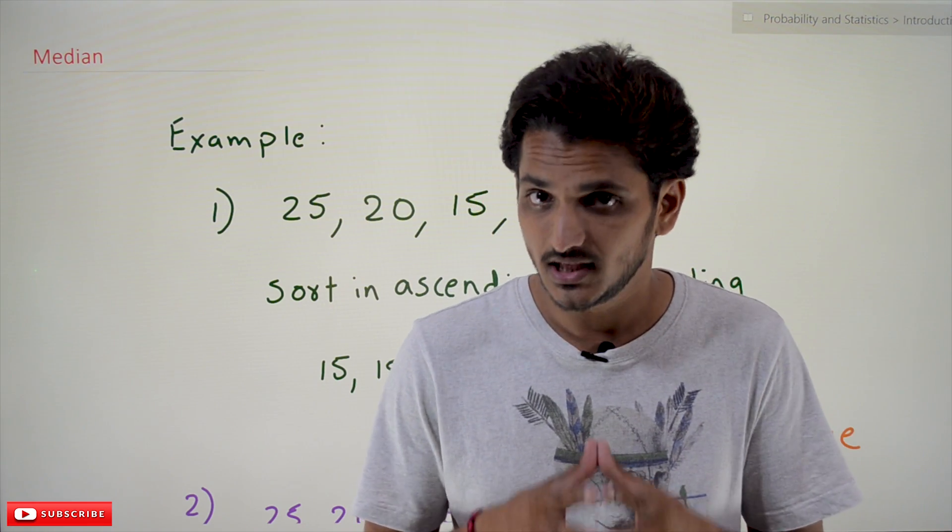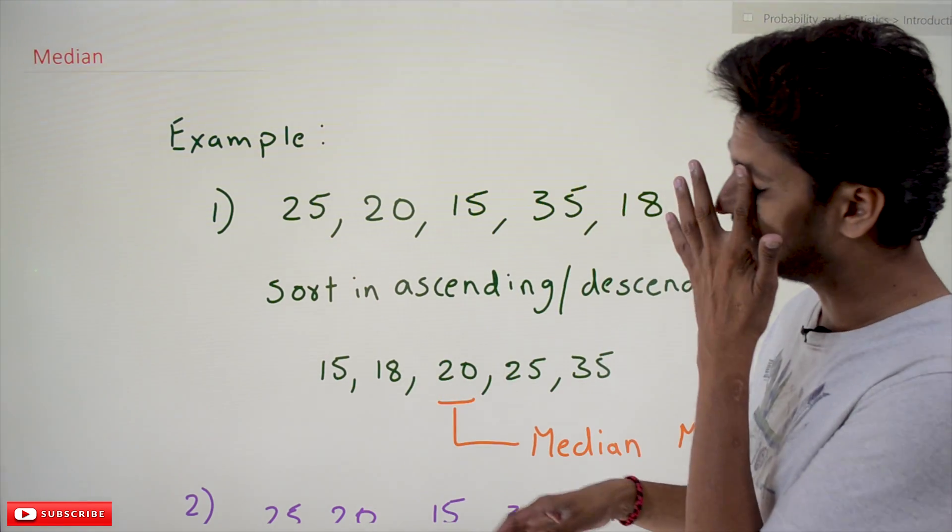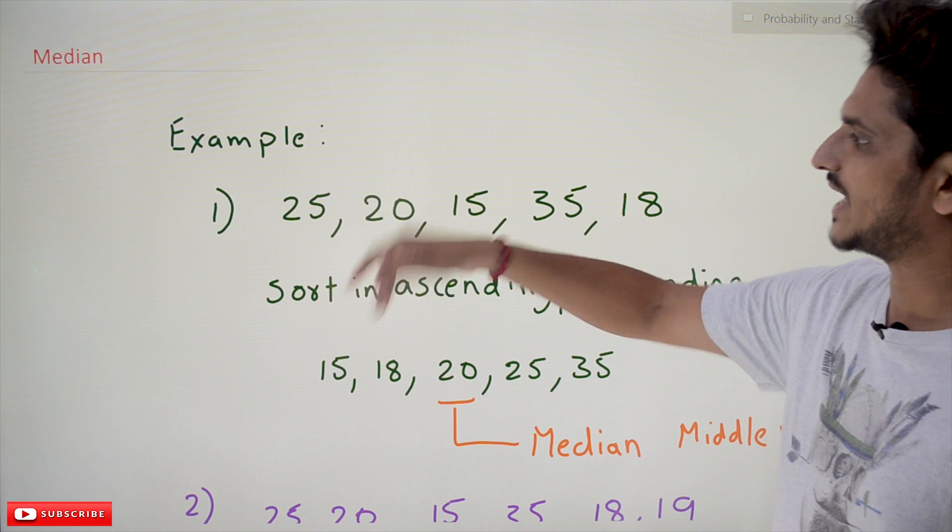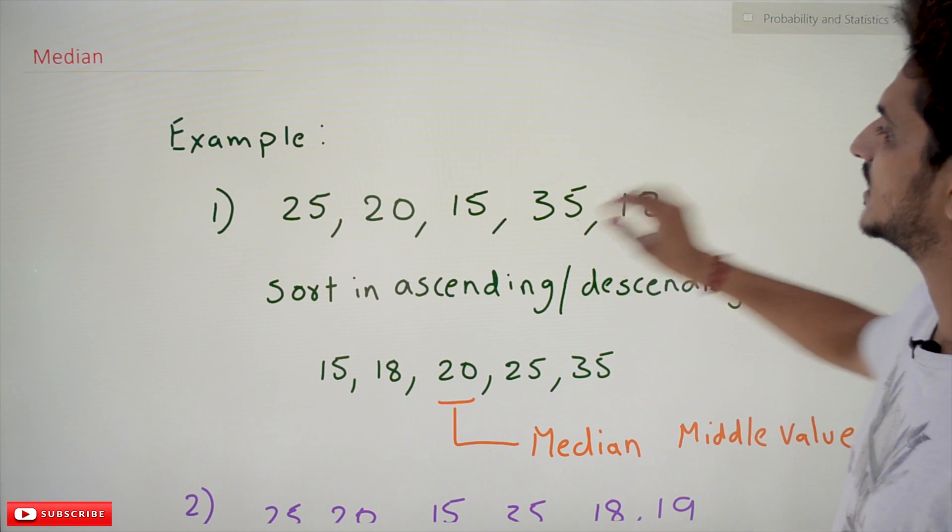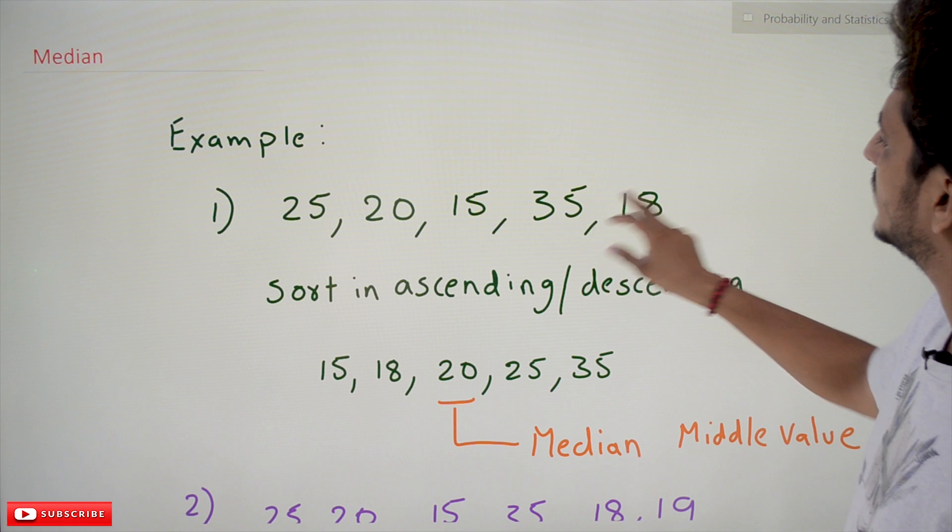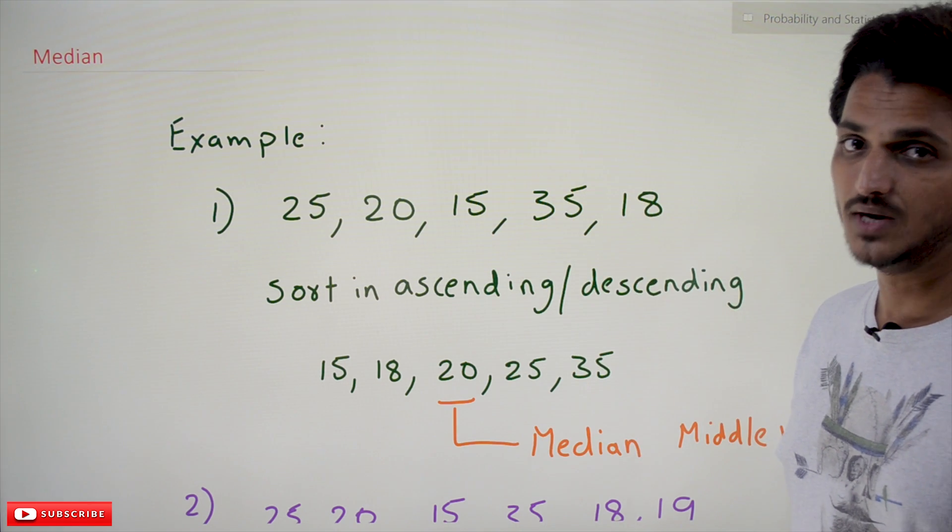Coming to today's class, we will understand how to calculate the median value. Let's go with an example. If you take the first example, here is the dataset: 25, 20, 15, 35, 18. These are the values provided. So how do we find the median value?